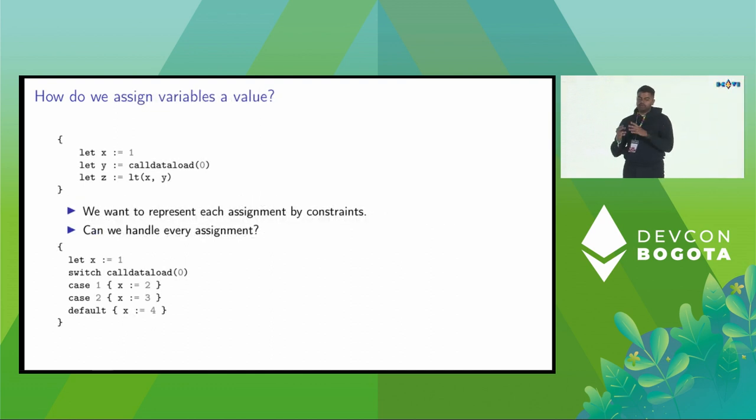Now that we know how to encode a very simple variable, we need to figure out how do we assign values to the variables. Here's a very simple Yule block with three variables, X, Y and Z. X is assigned the value 1, Y is assigned 0, and Z is an expression in Yule less than X, Y. We want to represent each of this assignment by constraints. For X and Y it's pretty simple. For X, you just have the equation X equal to 1. For Y, it's a simple EVM variable. We can't produce any extra constraints from call data load 0 because it can be anything. We just have to treat Y as a regular EVM variable. With Z, we have to figure out a way to encode less than of X, Y. We will deal with that later.